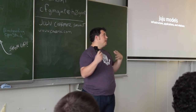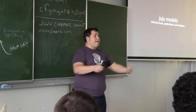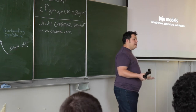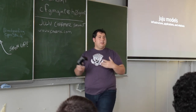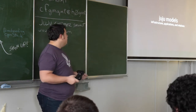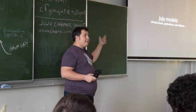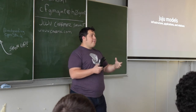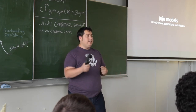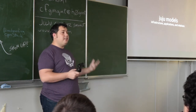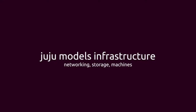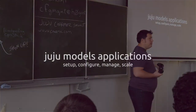By Juju modeling in an abstract language where you have machines, storage, and network, it makes it really easy to say that my application needs a machine, a network, and storage. Juju translates that — it's the translation layer to the actual execution: how do I get these from the thing I provision against? Juju models networking, storage, and machines — that's the important infrastructure part. And then Juju models applications using charms.